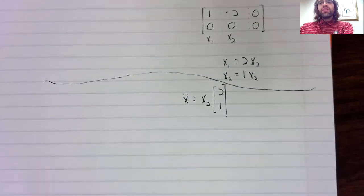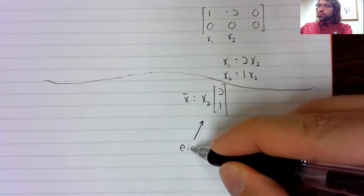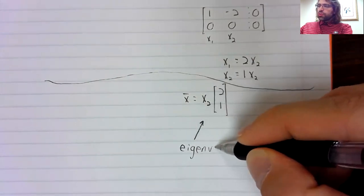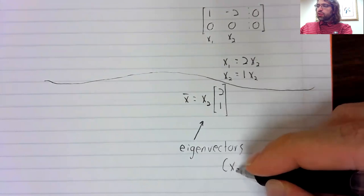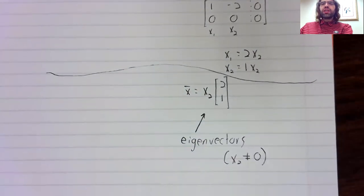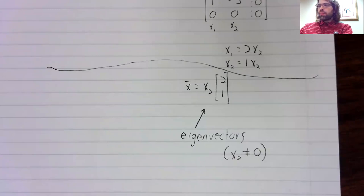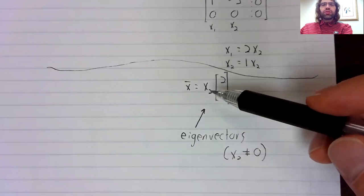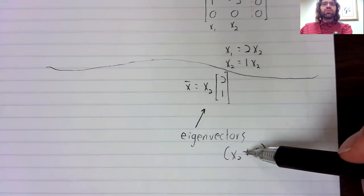Second, we found the eigenvectors associated with the eigenvalue two. These solutions are our eigenvectors, with the single exception that eigenvectors are by definition not the zero vector. So every value of x2 gives us an eigenvector except for this one.